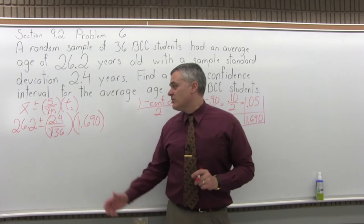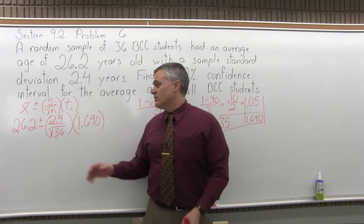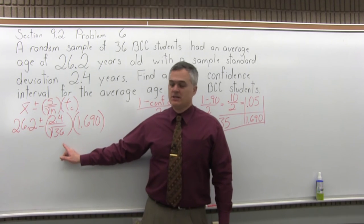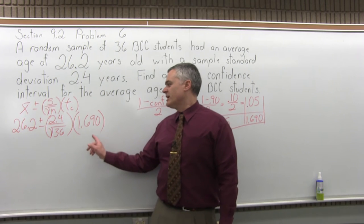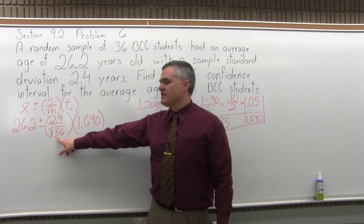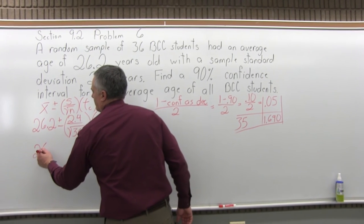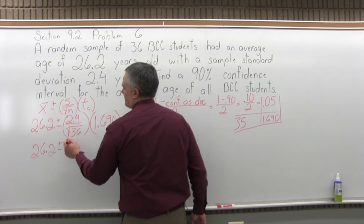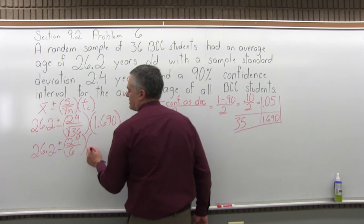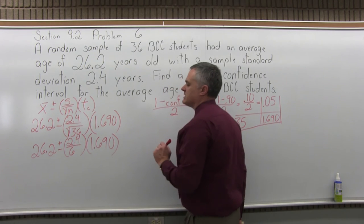And now the formula's been filled out. So what we need to do now is we do the math. This is the point at which you want to be careful. The math is easy if you have a calculator. It's filling in the formula that's a more common source of errors. Once you fill it in, if you're careful, most likely you'll get the right answer. Once we start the math, we have to take care of the square root first. The square root of 36 is the first thing I need to deal with. So I'll leave the 26.2 for now, plus or minus the 2.4 in the numerator will stay for now. But square root of 36 is 6 because 6 times 6 is 36. So I'll change the square root of 36 to a 6, and I'll leave the rest of it the way it is. The 1.690 at the end can stay 1.690.